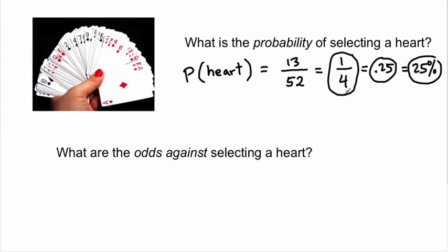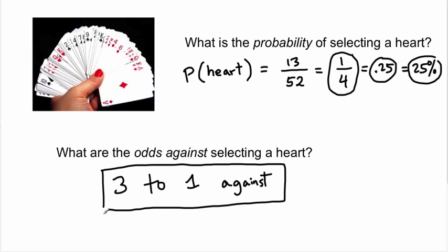Now compare the probability with the odds against selecting a heart. The odds against would be three to one: out of four possibilities, there are three ways you don't get a heart and one way you do. So odds against selecting a heart is three to one against.